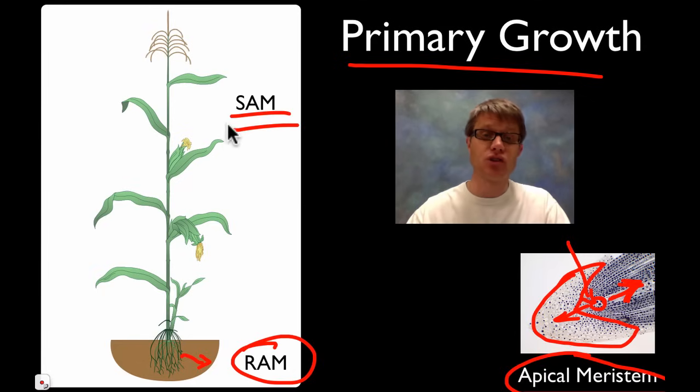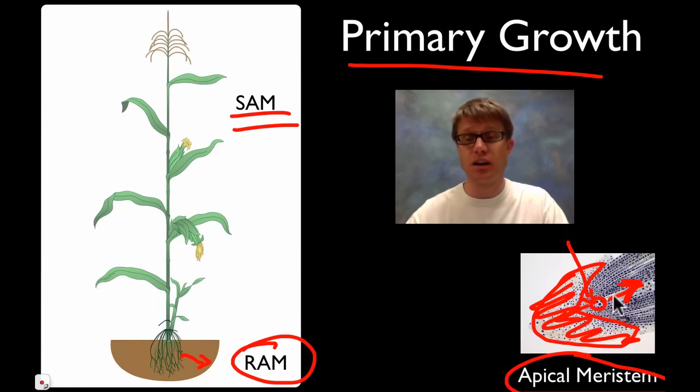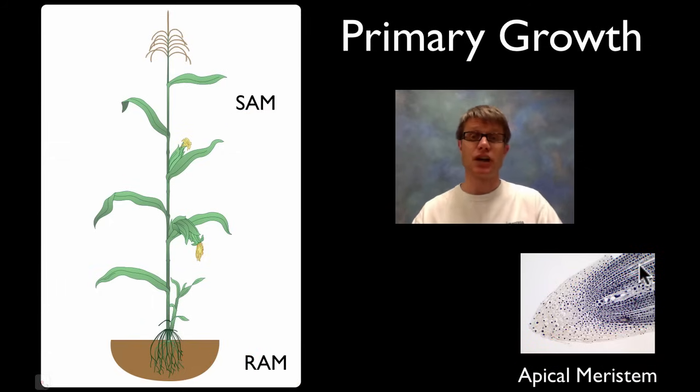If we look up at the SAM or the shoot apical meristem, it's not going to have this root cap because it doesn't have to, it's just pushing its way through air. So it's not going to have this. But it's still going to have this meristem because it's producing new cells behind it. And as they mature it gets bigger and bigger and bigger. So that's going to allow us to grow up and down.